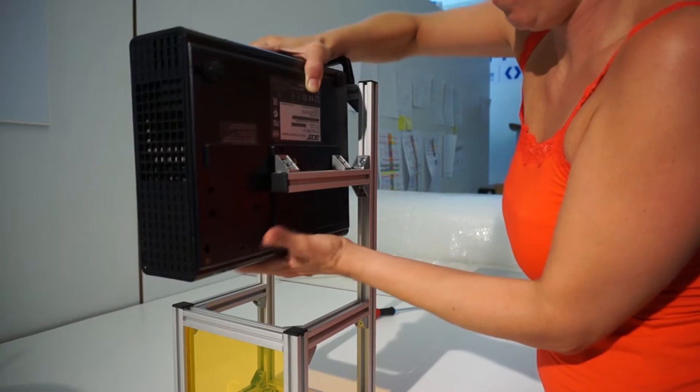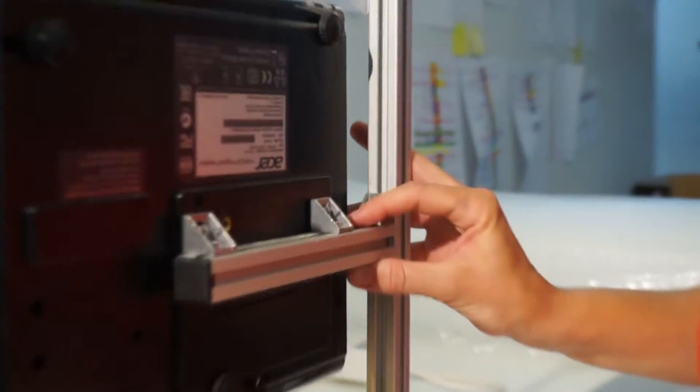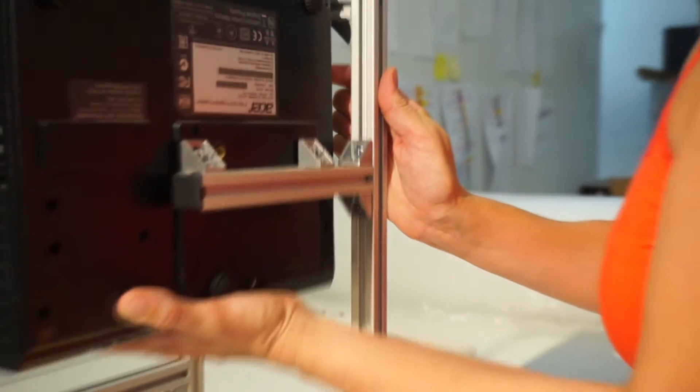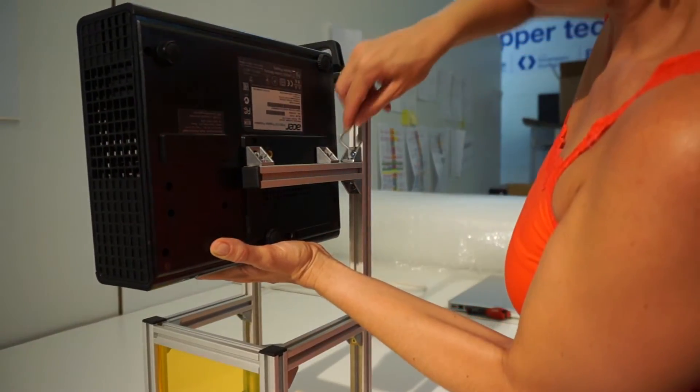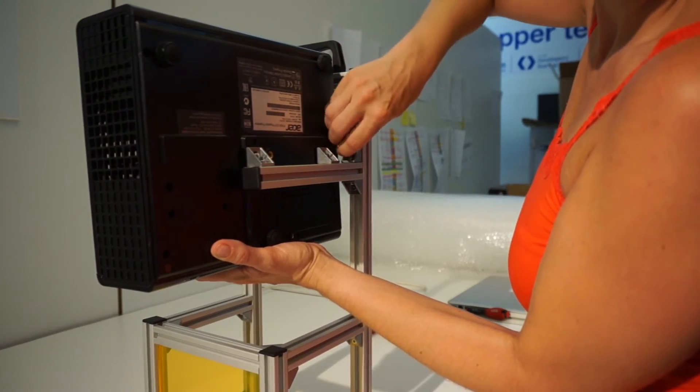Now you can move your projector up and down to the desired position. Once you find your desired position, just tighten the screw back again, making sure your projector is stable and perpendicular.